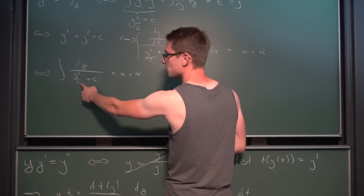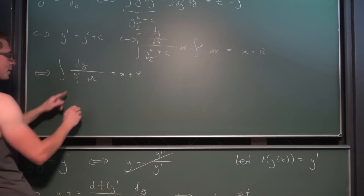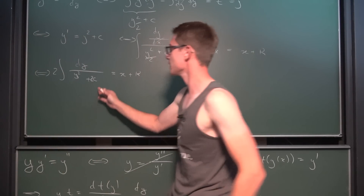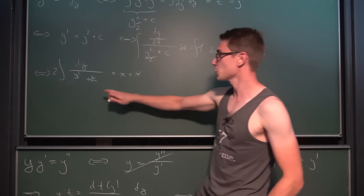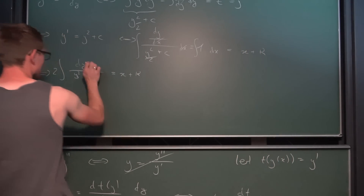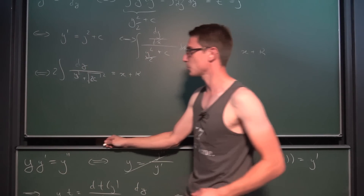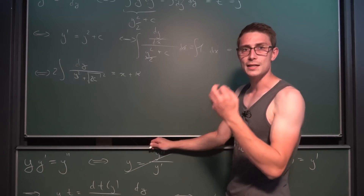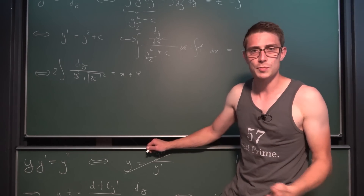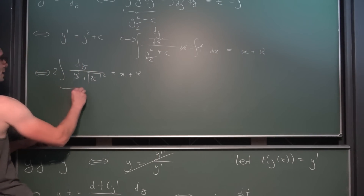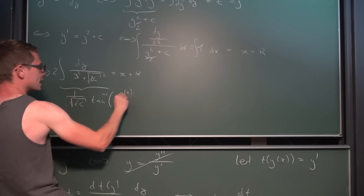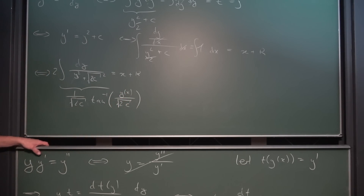Factoring out the 1/2 from the denominator brings a factor of 2 to the front via linearity of the integral. Then we play a small trick on the constant: we write 2c as (√(2c))², so the integral becomes a standard inverse tangent form. This integral is nothing other than the inverse tangent, scaled by a factor of √(2c). So the result is: (1/√(2c)) · arctan(y / √(2c)), and multiplied by the factor of 2 from before, we have 2/√(2c) · arctan(y / √(2c)) = x + κ.